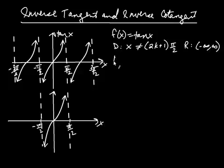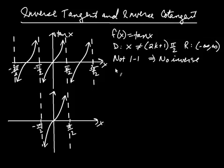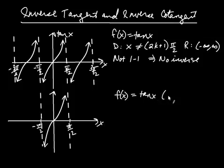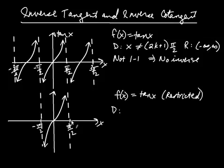The function we just mentioned is not one-to-one, and that implies there's no inverse. So what we're going to do is restrict the domain of tangent. We're going to look at a new function — restricted tangent. Nobody really says 'restricted'; you have to know it's restricted by the domain given. We're going to restrict the domain to be from negative pi over 2 to pi over 2.